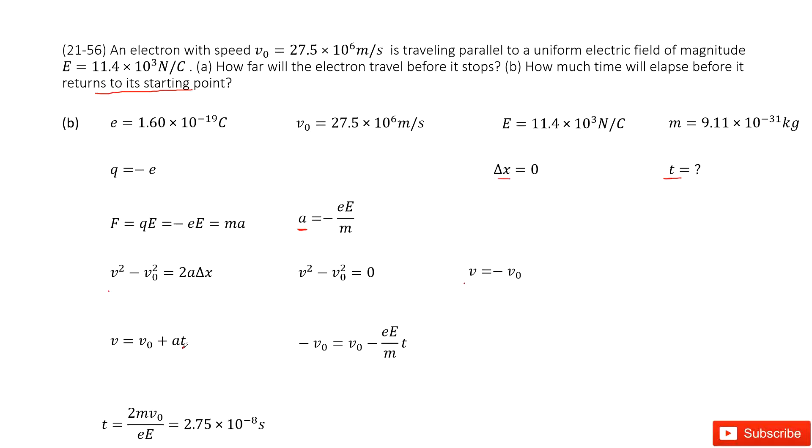Then we can get the time function. We can say final velocity equals initial velocity plus acceleration times t. And input the final velocity v as negative v0, input the acceleration inside, you can get t. Thank you.